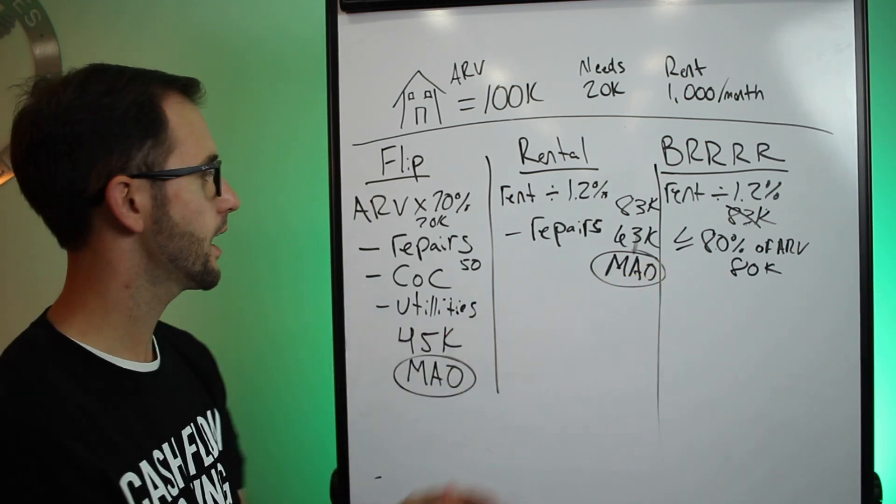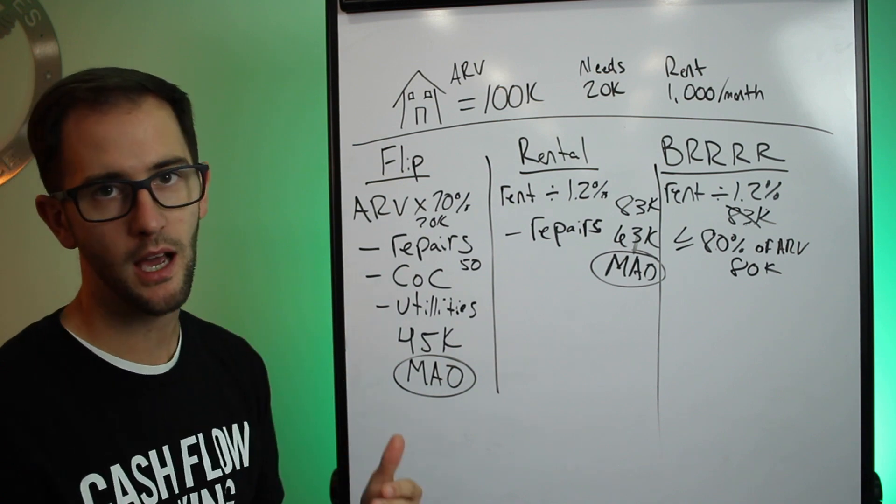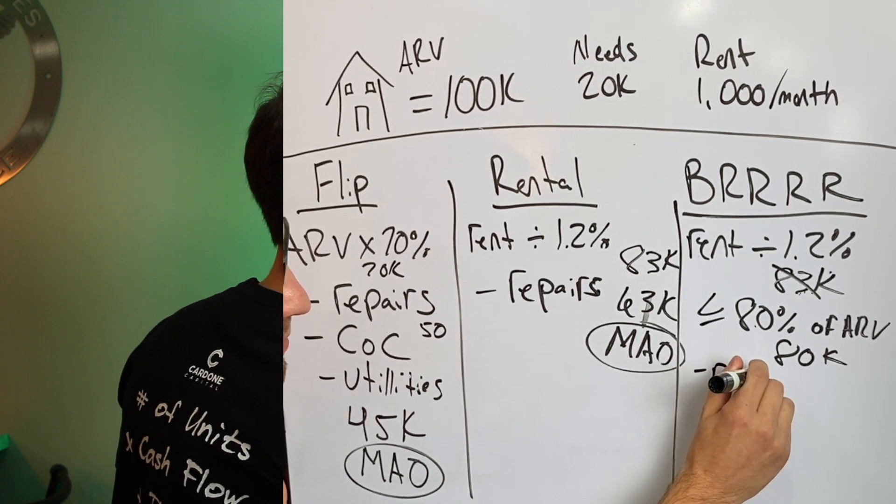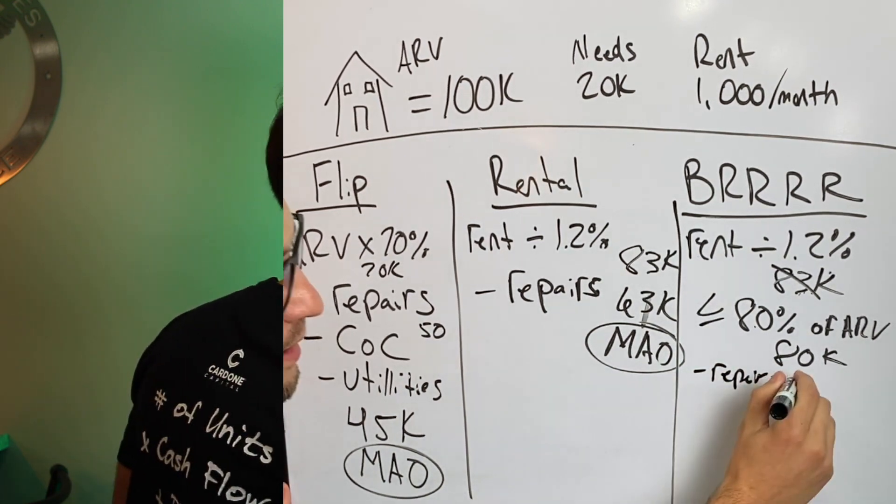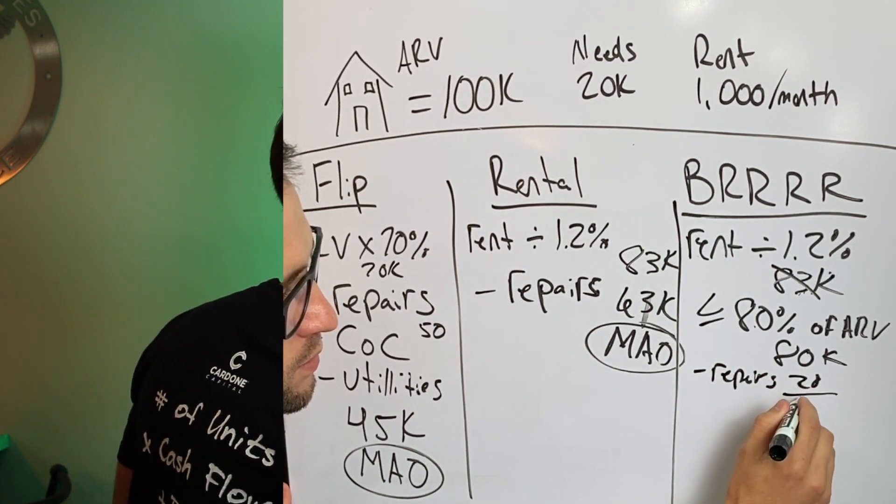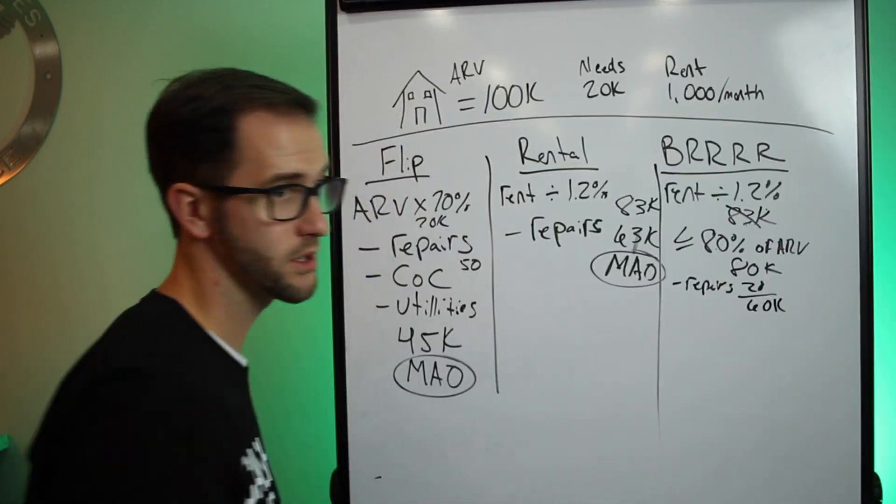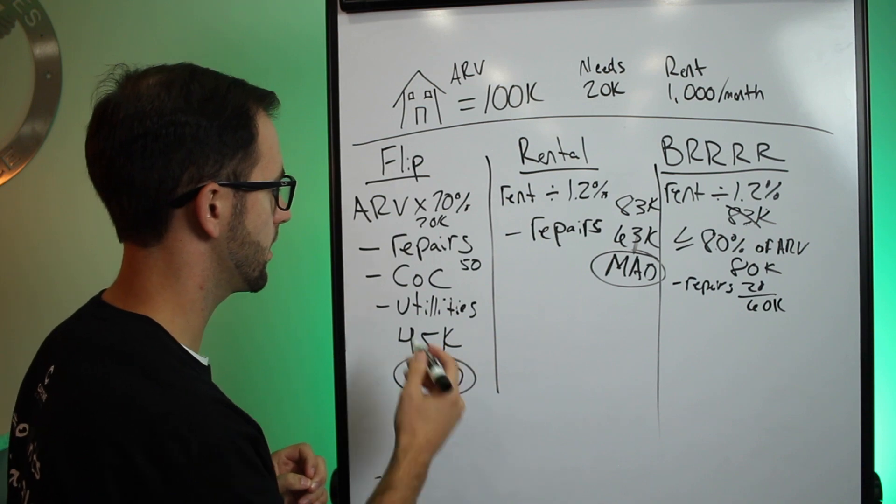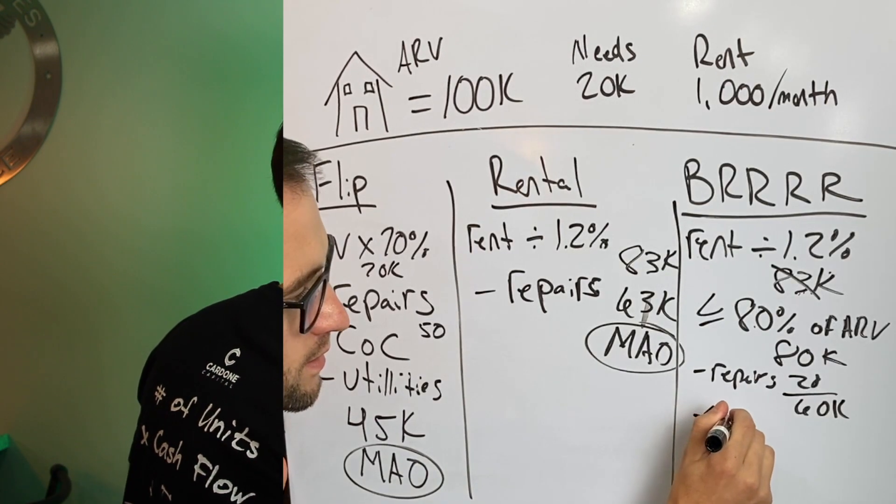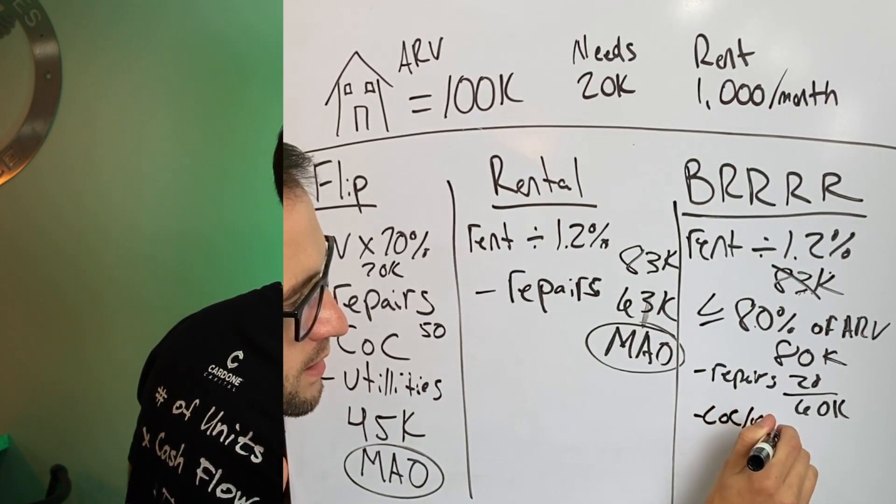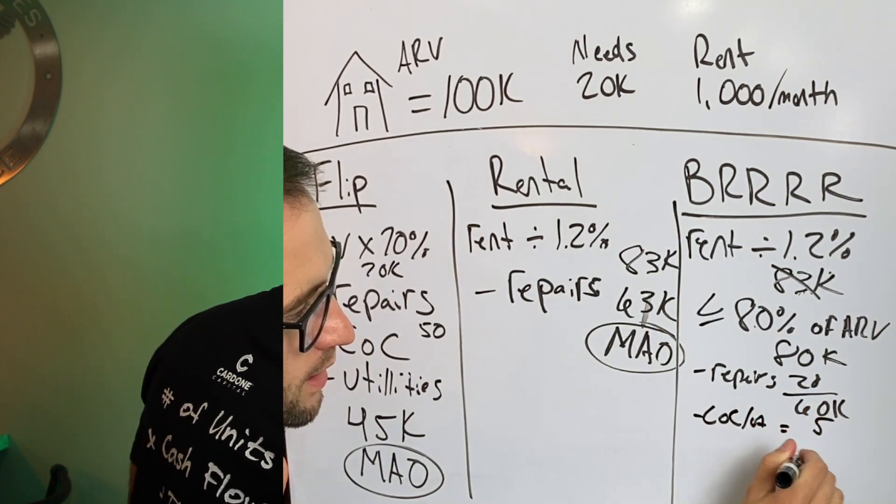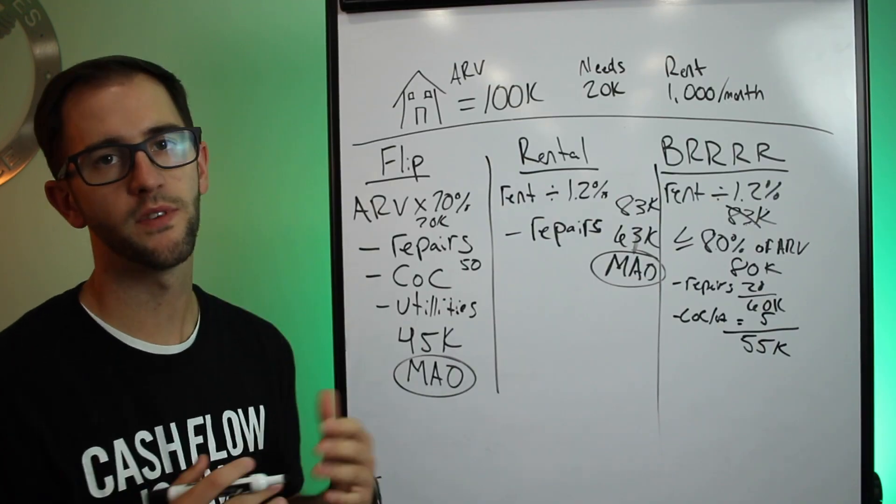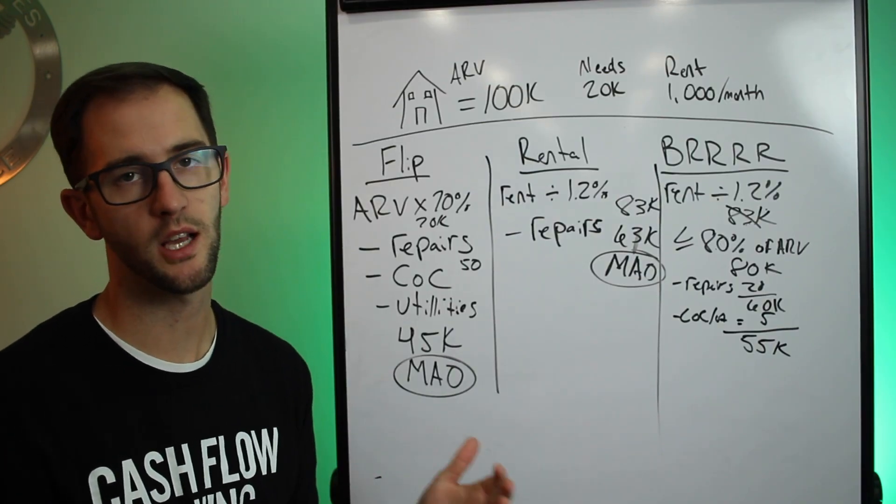And then we continue on the same way that we did with the flip. So now that we have our 80K, now we're going to back out repairs, cost of capital and utilities. So repairs, like we said, that's 20K. Now we're down to 60. And then minus the cost of capital and utilities, 5K. So now we have a $55,000 max allowable offer.